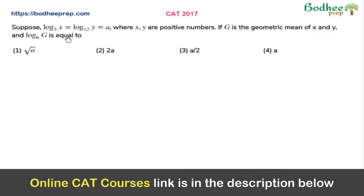Now here the question says that if log of x with base 3 is equal to log of y with base 12, which is equal to a, where x and y are positive numbers, and G is the geometric mean of x and y, then we need to find log of G with base 6.